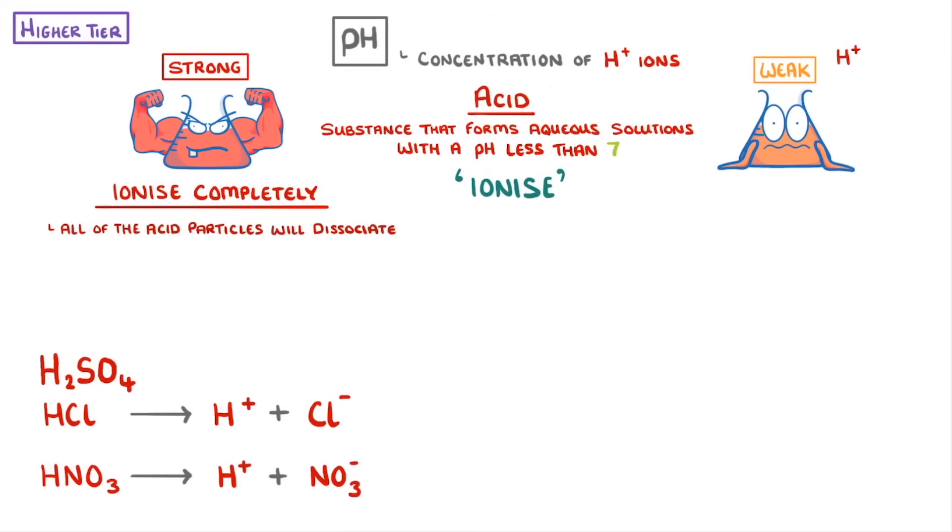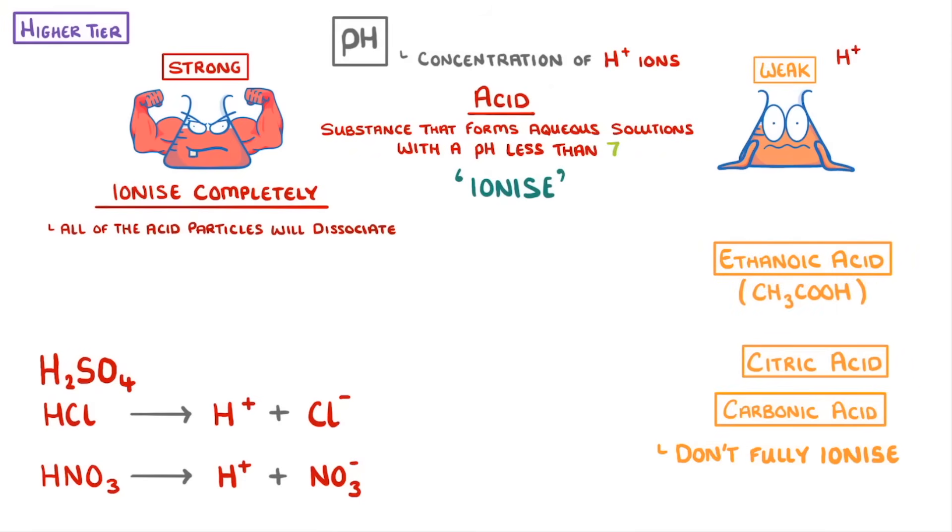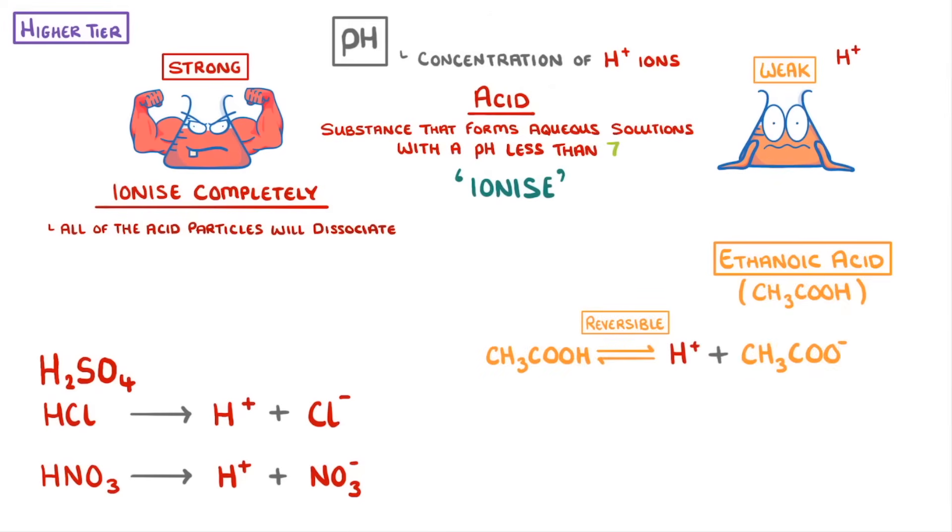Weak acids, on the other hand, which include things like ethanoic acid, citric acid, and carbonic acid, don't fully ionise. In their case, only a small portion of the acid particles actually dissociate to release hydrogen ions. This is because the ionisation of a weak acid is reversible, which means that there's an equilibrium between the undissociated and dissociated forms of the acid.